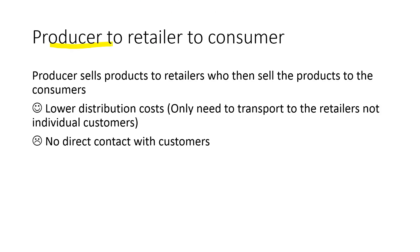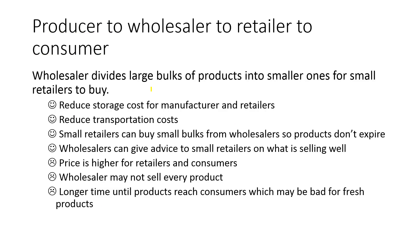Producer to retailer to consumer is where the producer sells the product to a retailer, who then sells it to the consumer. This results in lower distribution costs as you only need to transport to retailers, not individual customers. The downside is that the business loses touch with the customer, because the retailer is now dealing with the customer and you are dealing with the retailer.